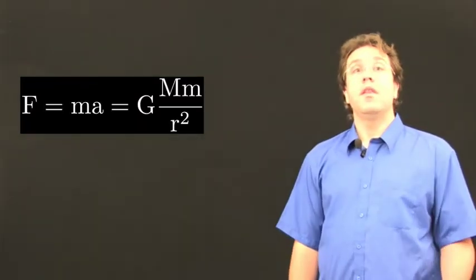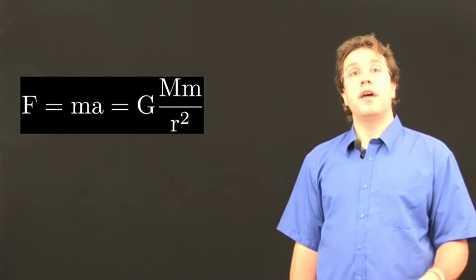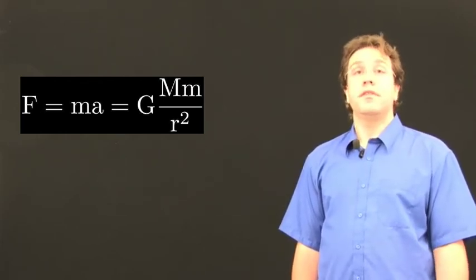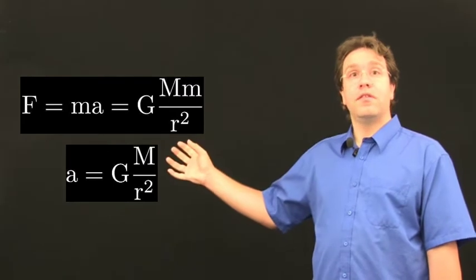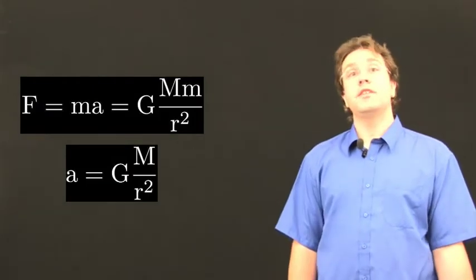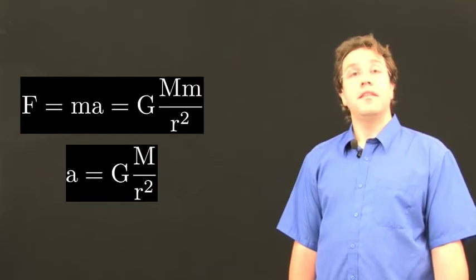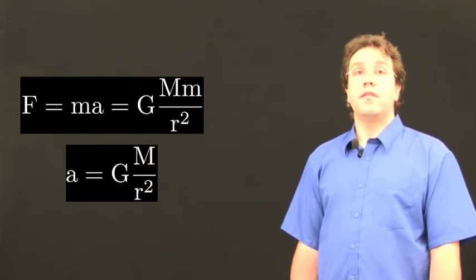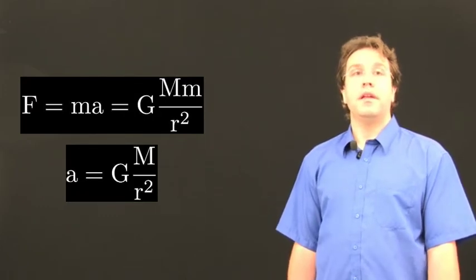You can see immediately that we have little m on both sides — the mass of the object on which the force is acting. So we can cancel those out on the left-hand and right-hand side, leaving us an equation for the acceleration resulting from gravity: A equals big M times the universal gravitational constant G divided by the distance squared. This will now allow us to calculate the acceleration due to gravity at any distance from a certain massive object. Going back to the example of somebody standing on the surface of the Earth, we can now calculate the acceleration due to gravity that person experiences.